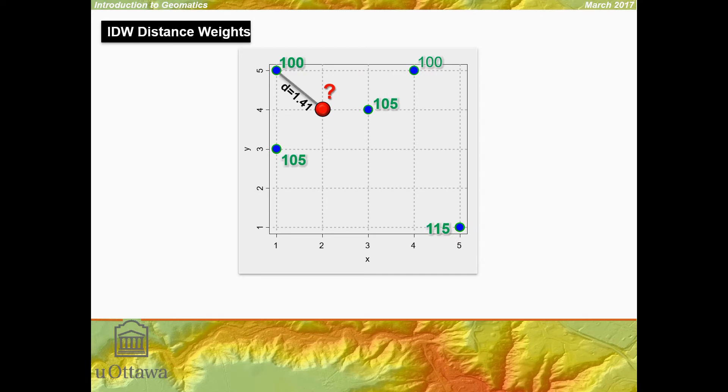First up, we look at the distances. We get the distance for each of the points. In this case, both the value of 100 and the value of 105 are both 1.41 distance units away from the location to be interpolated.